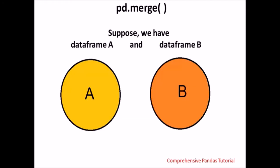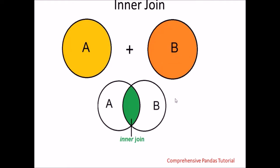We'll first look at merge. The pandas merge function will seem quite similar to people who have a SQL background. Suppose we have two data frames, data frame A and data frame B. There are four types of join possible: inner join, outer join, left join and right join. In inner join, we merge these two datasets together and find all those rows or values which are common to both of them on a particular column, also called the key column.